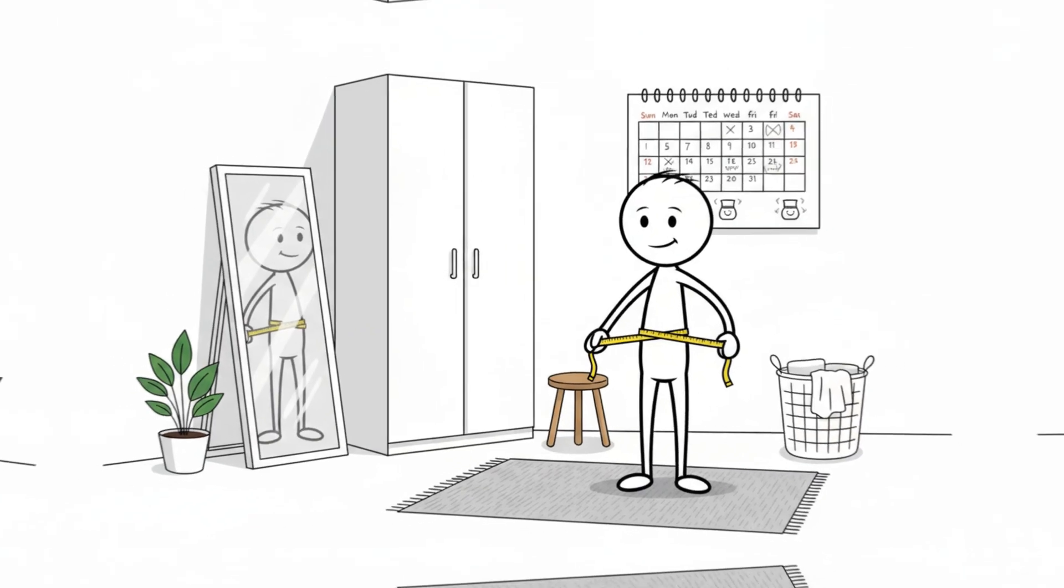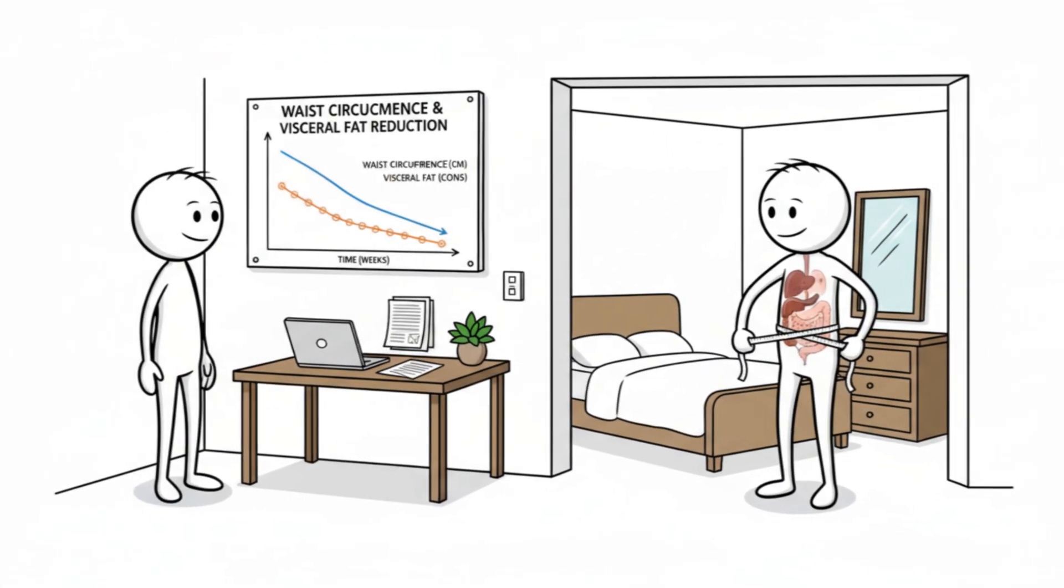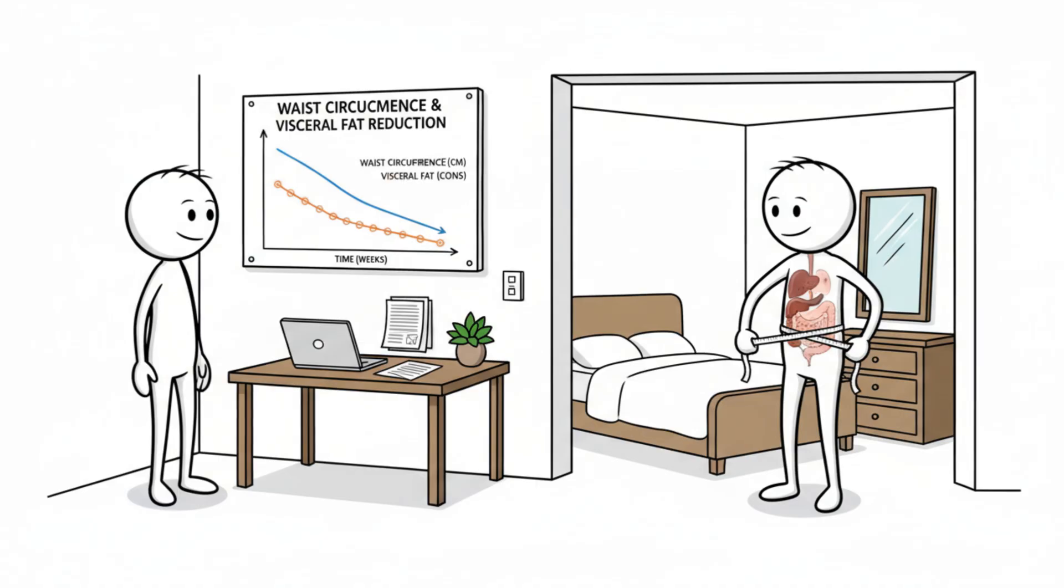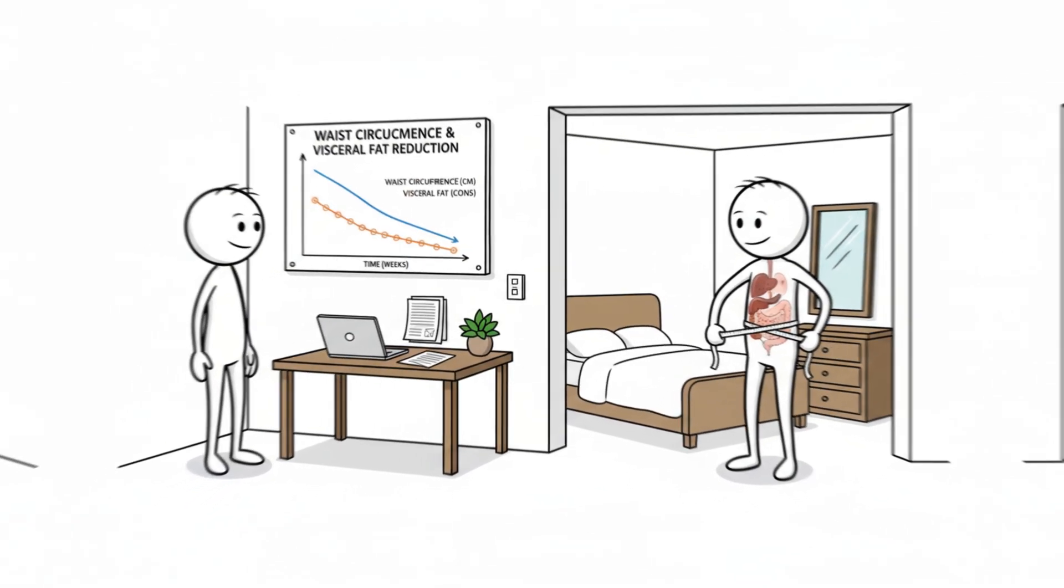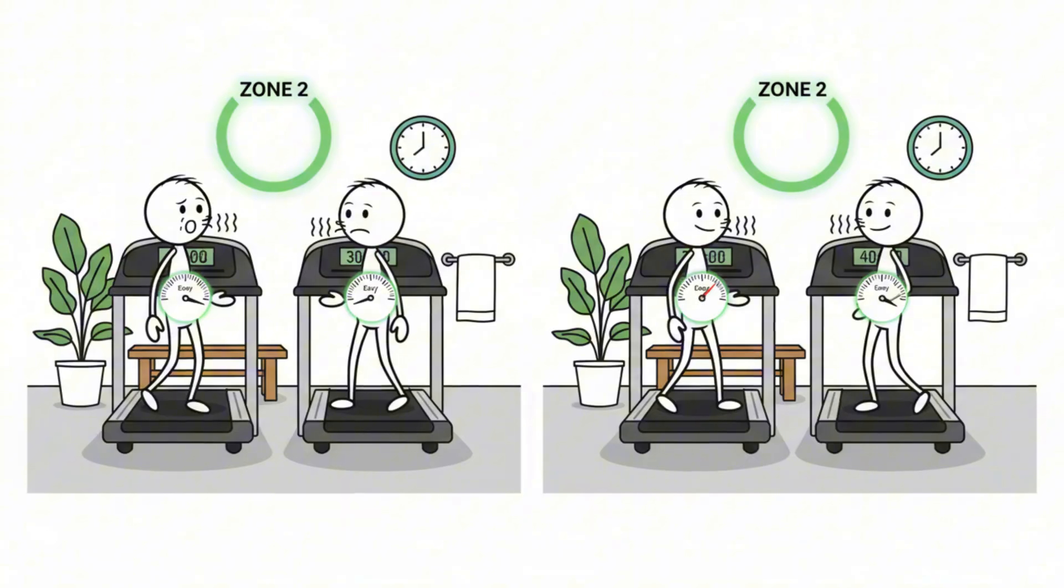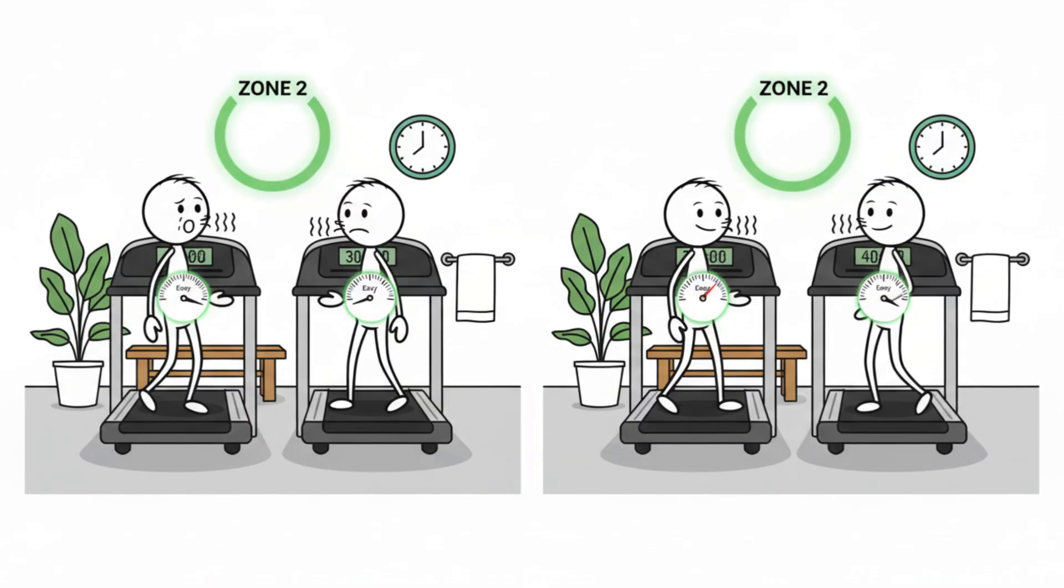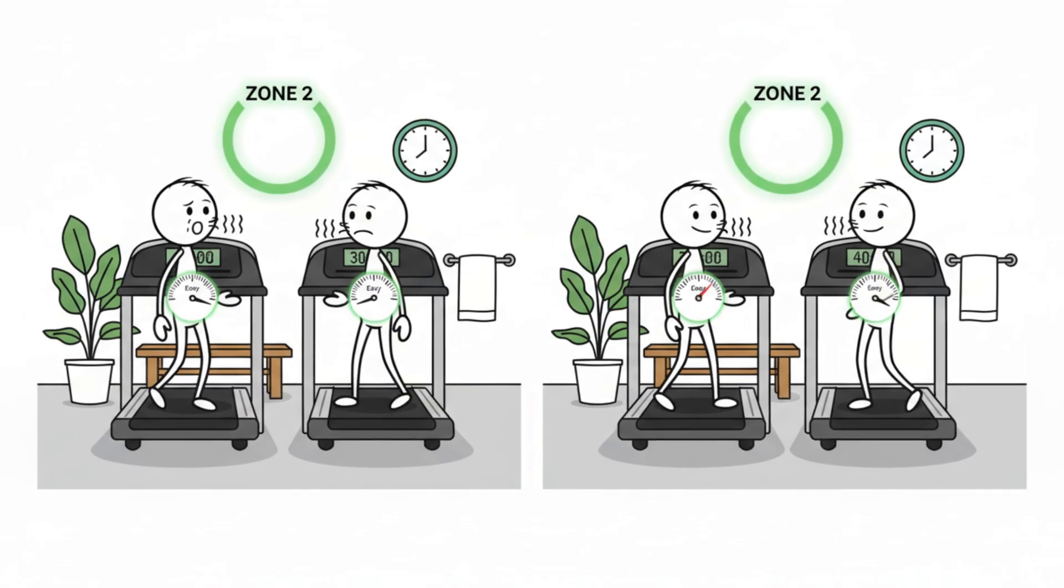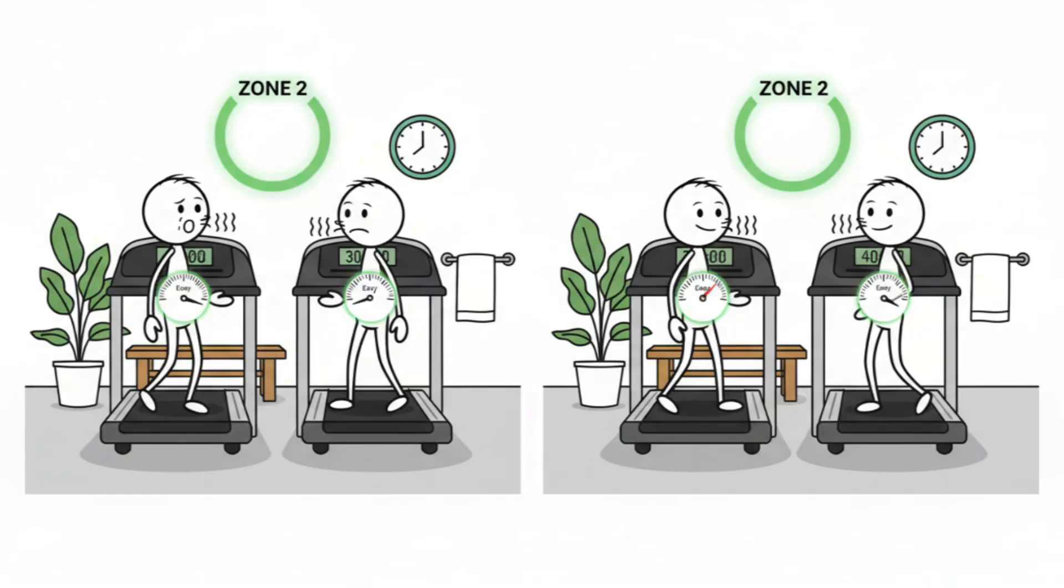Another indicator is how easily you can maintain zone 2 over time. If you notice you can sustain longer sessions with stable breathing and lower perceived effort, that's a sign your aerobic system is improving. Better mitochondrial efficiency indirectly signals improved fat metabolism.